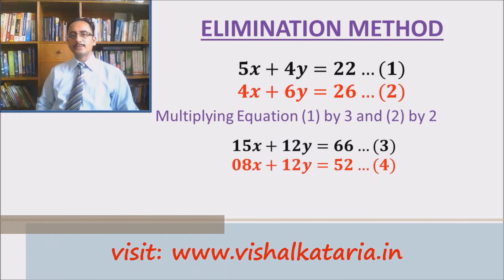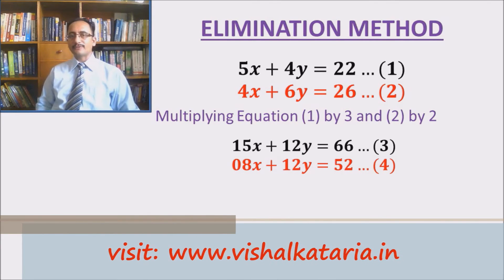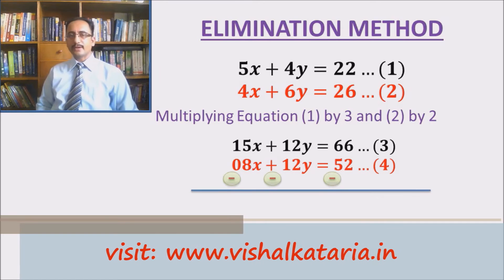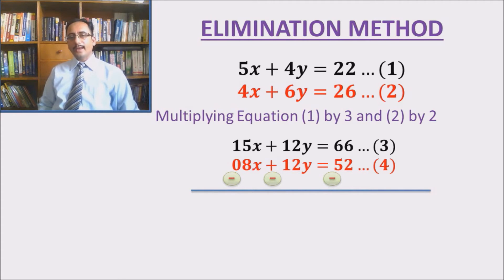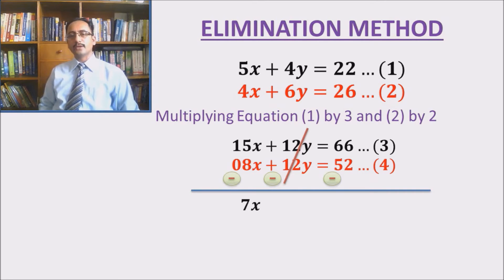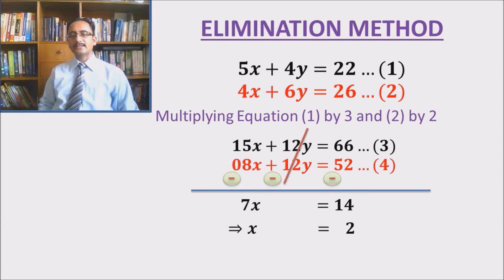Subtracting the equations means we change all the signs of the second equation — positive terms become negative. Now 12y minus 12y gets cancelled, and 15x minus 8x equals 7x, and 66 minus 52 is 14. So we get 7x equals to 14. Dividing both sides by 7 we get x equals to 2.